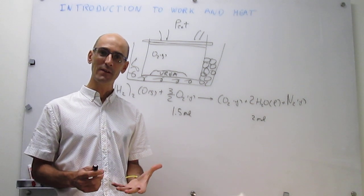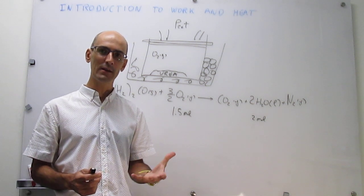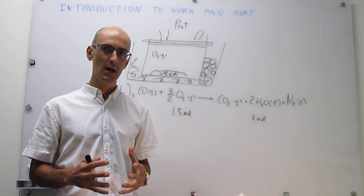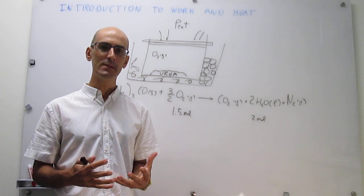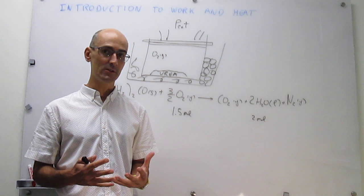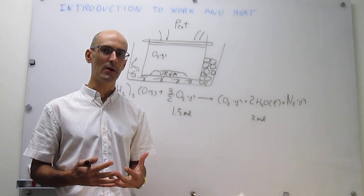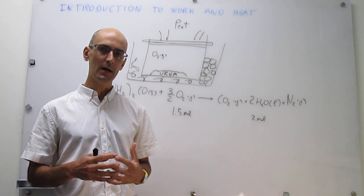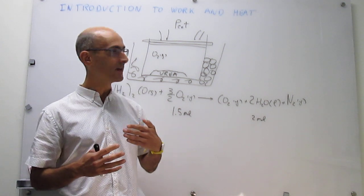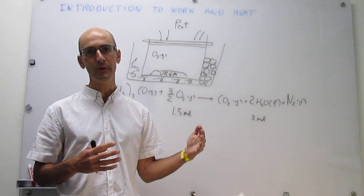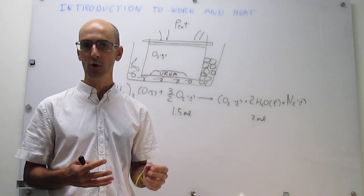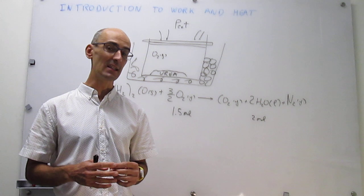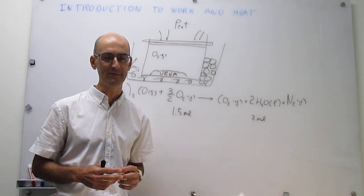To wrap up: work and heat are the only two ways that energy can be transferred in a process. Work requires motion against an opposing force; heat does not. Work is the useful type of energy transfer, and heat is the less useful type of energy transfer.